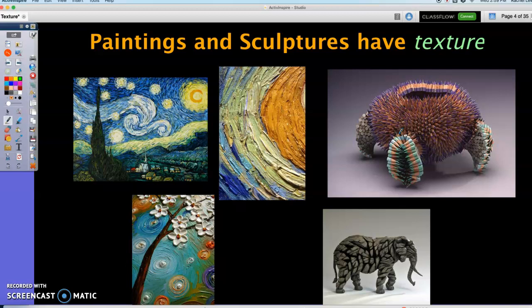Don't want to go up close to that sculpture. It kind of looks like it would remind me of feeling a porcupine, right? And then this elephant, I don't know if it's made out of stone or clay, but it looks like it would definitely have a bumpy texture.